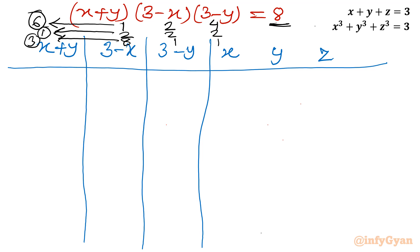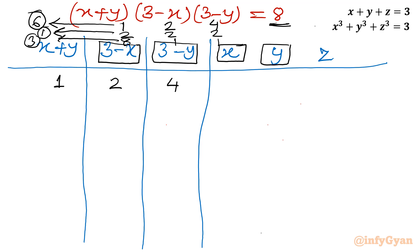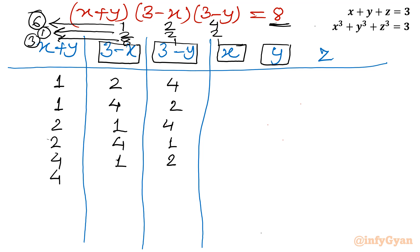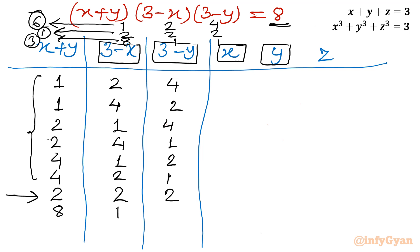Writing all positive factor combinations: for 1,2,4 we list all 6 permutations — (1,4,2), (1,2,4) wait corrected as (2,1,4), (4,1,2) and so on — then the single case 2,2,2, and then the three permutations of 8,1,1: namely (8,1,1), (1,8,1), and (1,1,8). That completes all 10 positive factor combinations.